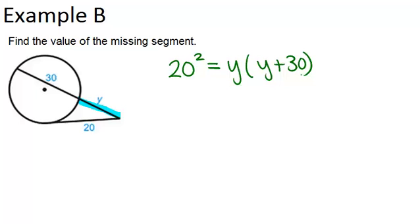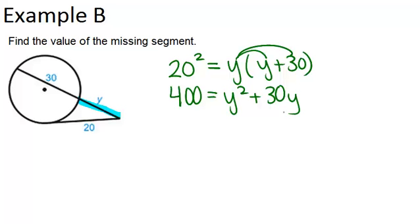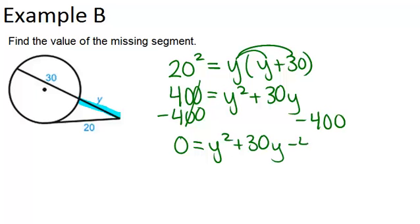We can solve this equation. 400 equals, and then we'll have to distribute, Y squared plus 30Y. Now this is a quadratic equation, so to solve it, we want to set it equal to zero first, so minus 400 from both sides to do that. So we have zero equals Y squared plus 30Y minus 400.